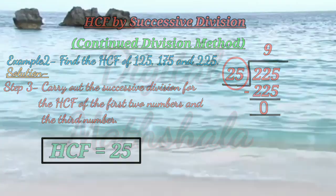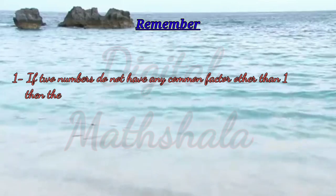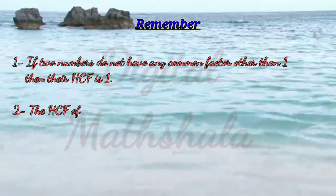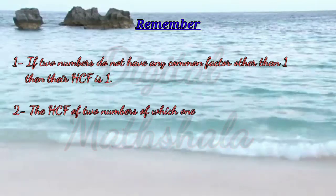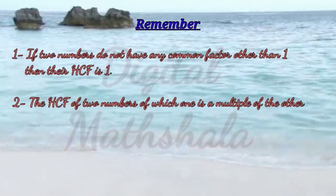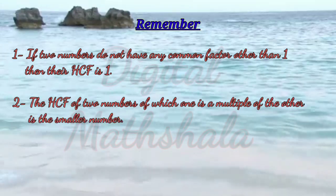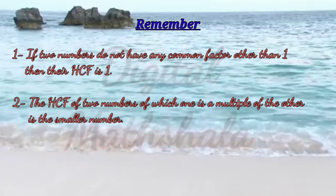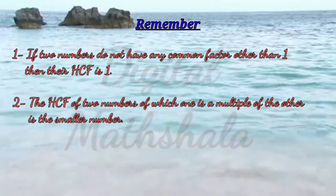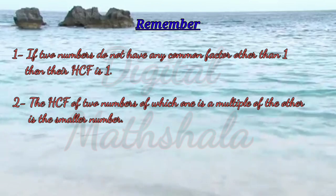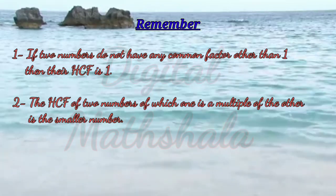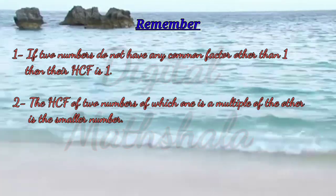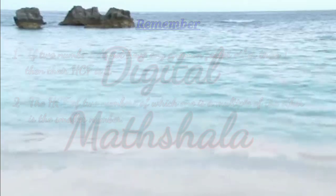Remember, if two numbers do not have any common factor other than 1, their HCF is 1. The HCF of two numbers of which one is a multiple of the other is the smaller number. Do not get confused while finding the HCF by the continued division method.